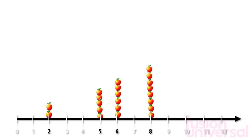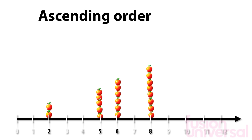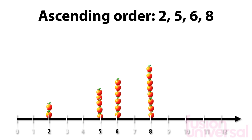We can now write the numbers down in ascending order by moving from left to right. The first number we come to along the number line is 2, the next is 5, then 6, and finally 8. We have compared the number of apples in each basket and arranged the numbers in ascending order.